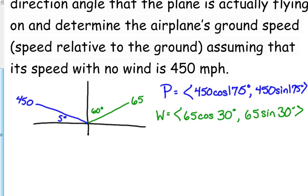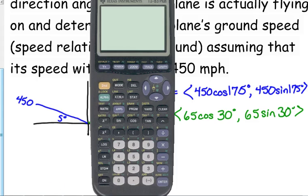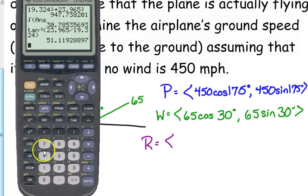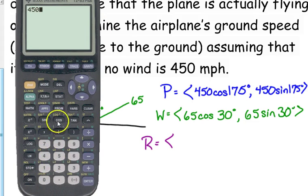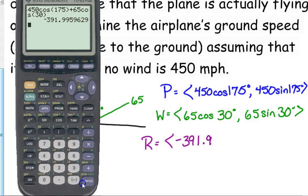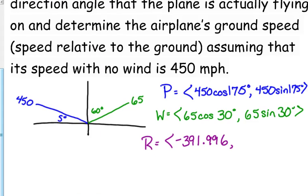Our resultant is, let's add our components. 450 cosine of 175 plus 65 cosine of 30. Didn't close my parentheses. Negative 391.996. Does that make sense? No. Does it? Yes. Why do you say no and why do you say yes?